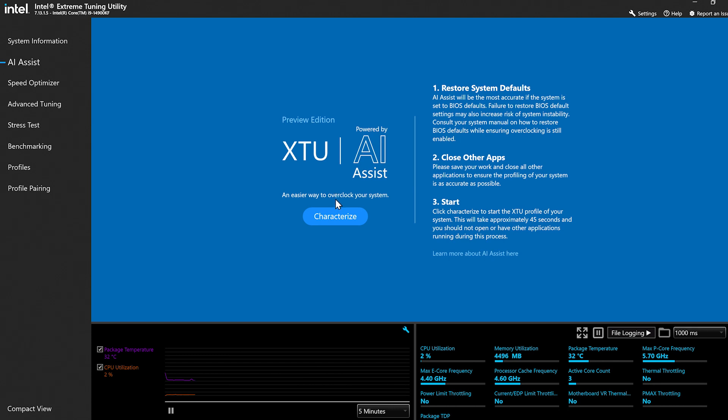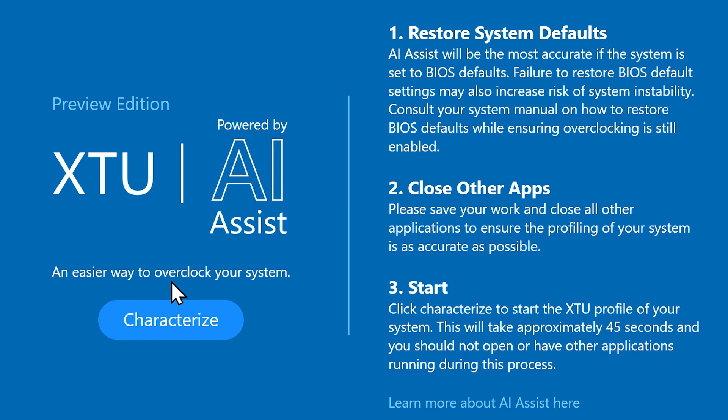Easier and smarter. Some important things to know before starting: we recommend restoring your system to default settings — go into BIOS and set everything back to defaults. That gives a good baseline to start from. Then get your system up and going with overclocking enabled, close all other applications, and then start the characterization — which we'll go ahead and do now. You just want to feed AI Assist clean data. Exactly.